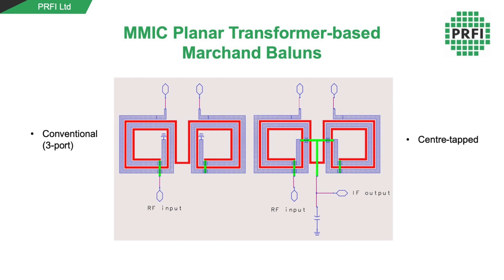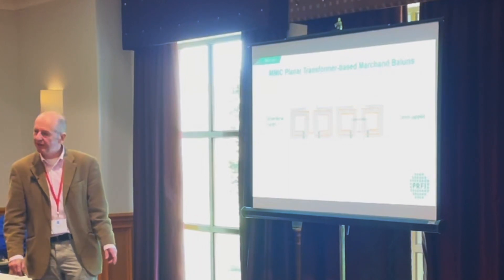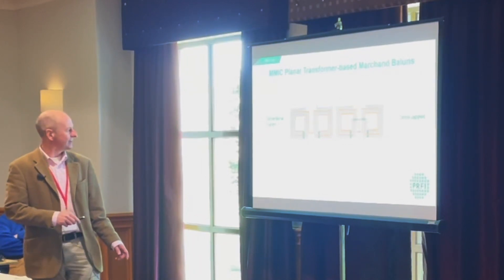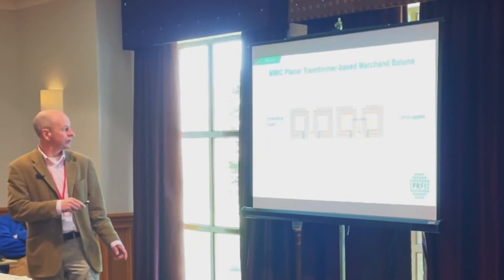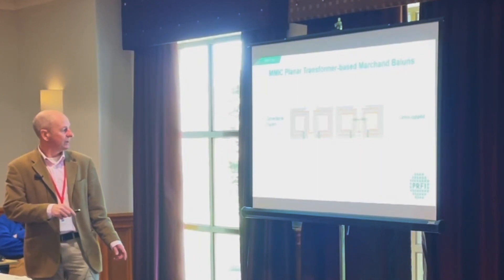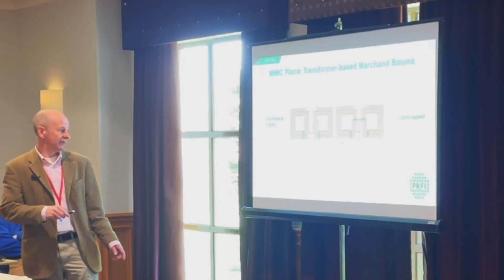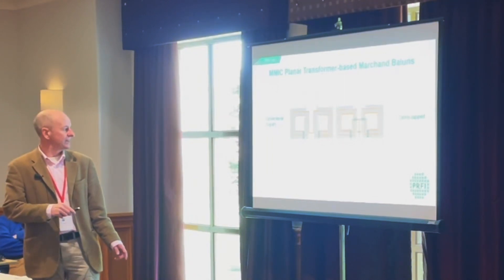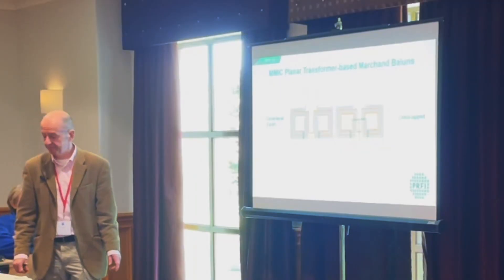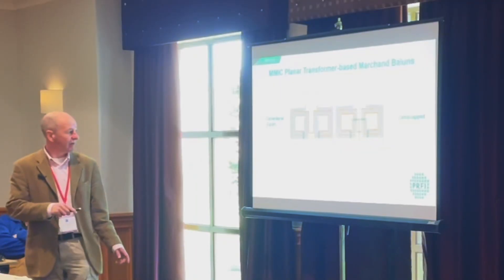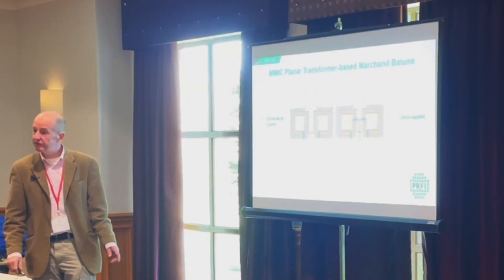This is how we realize the sub-baluns — nicely coloured in by co-author Andy, so you can see how they spiral round together. This is the conventional one: the ground is in the centre — you may recall from the MMIC photograph there was a via at the centre — and we take the differential output here. This is the centre-tapped variant: instead of grounding in the centre, we bring those points out and RF-ground them at a single point through a capacitor, and we extract the IF there.